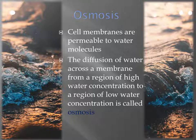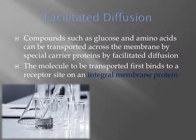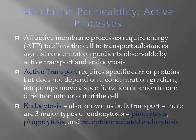Cell membranes are permeable to water molecules. The diffusion of water across the membrane from a region of high water concentration to a region of low water concentration is called osmosis. All active membrane processes require energy (ATP) to transport substances against concentration gradients, observable in active transport and endocytosis. Active transport requires specific carrier proteins and does not depend on a concentration gradient. Ion pumps move a specific cation or anion in one direction into or out of the cell.